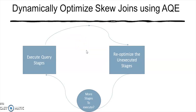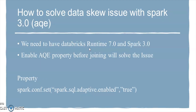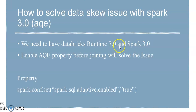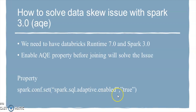To use Spark 3.0, you need Databricks Runtime 7.0 and Spark 3.0. If you are using Databricks, you have to migrate to runtime 7.0. To get the advantage of all the features, you need to enable the property `spark.sql.adaptive.enabled` set to `true`. This enables all the features discussed — it will solve skewness and other issues. This property needs to be enabled at the notebook level in the Databricks environment.